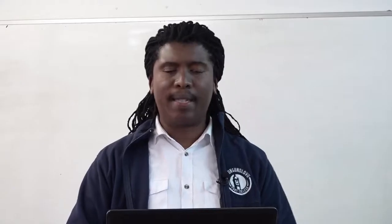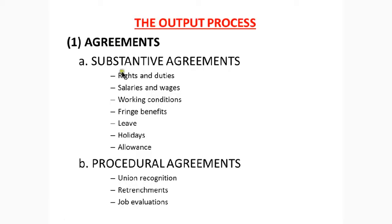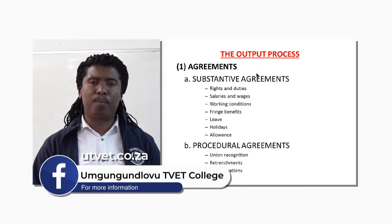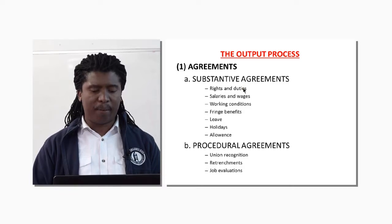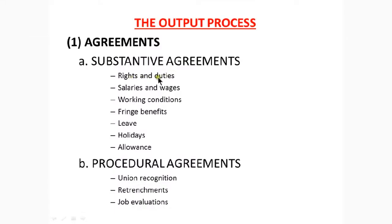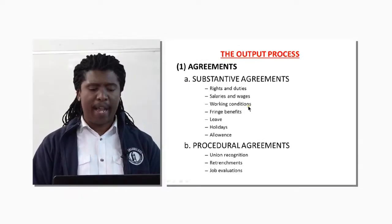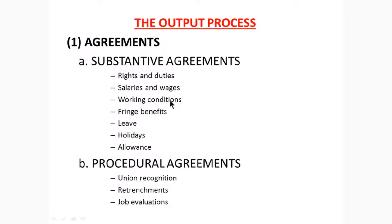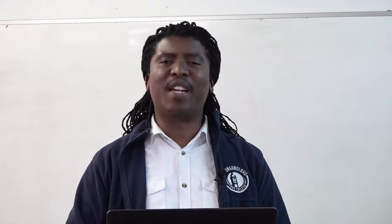The output process includes two types of agreements: substantive agreements and procedural agreements. Under substantive agreements, parties take essential agreements into consideration — we have rights and duties, salaries and wages, and agreements on working conditions. Bargaining councils in South Africa have agreed that working conditions should be bearable and acceptable in human nature. Fringe benefits, leave, and holiday allowances are all issues discussed when parties reach substantive agreements at the negotiation table.